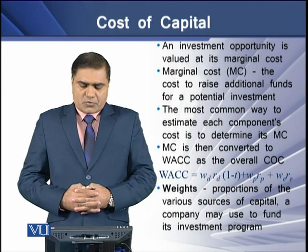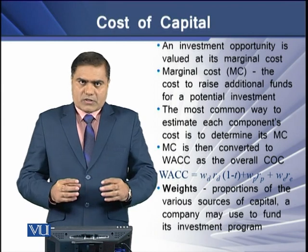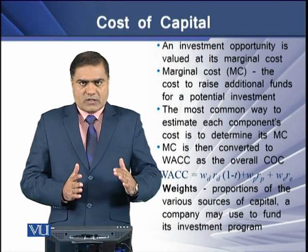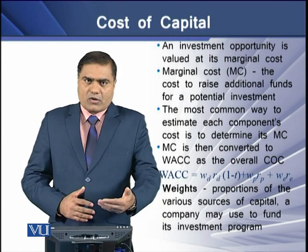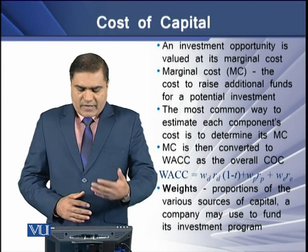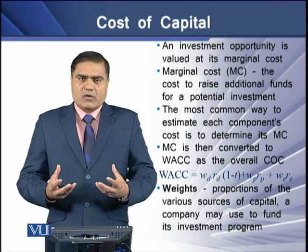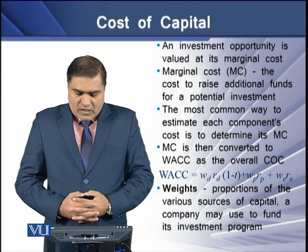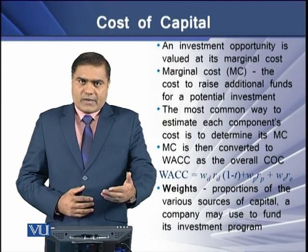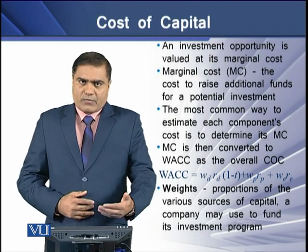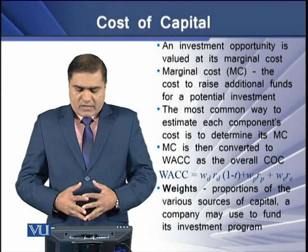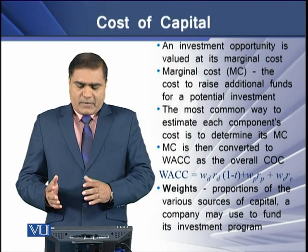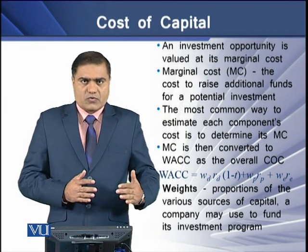The most common way to determine a component cost is the marginal cost, which is then converted into the weighted average cost of capital (WACC) of the firm. The WACC is the overall cost of capital of the firm. To determine it, we need certain variables: the weight of each capital component and the cost of each capital component. By weights, we mean the proportion of various sources of capital a company uses to fund its investment.